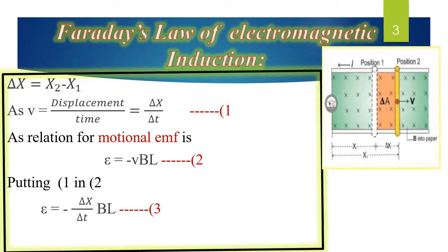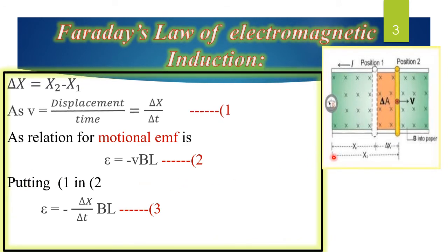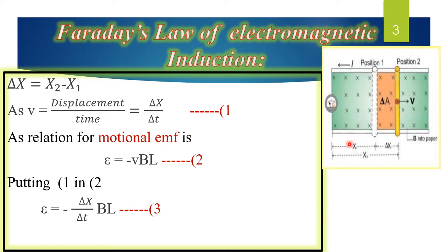To derive the mathematical relation of Faraday's law of electromagnetic induction, let us observe this activity. Suppose we have a conductor of length L placed on conducting metal rails, and these conducting metal rails are connected with a galvanometer. We have placed this whole arrangement in a magnetic field directed into the paper. Initially, the conductor is at position 1, represented as x1.